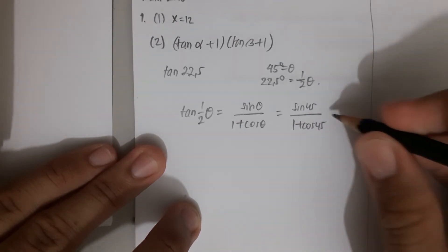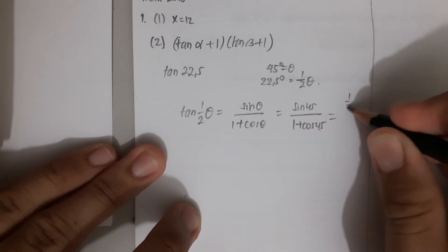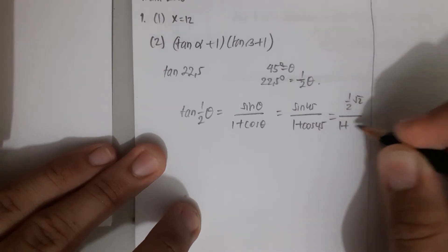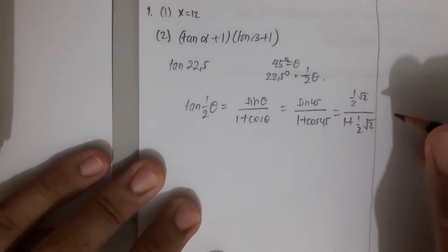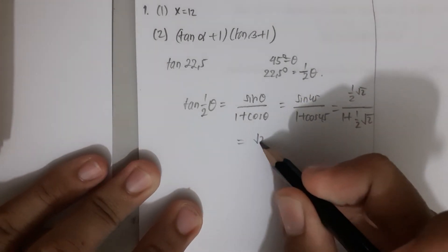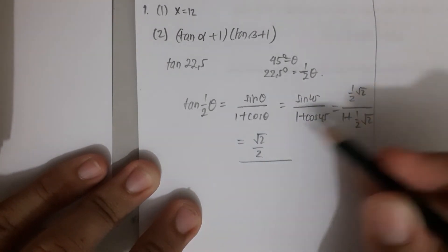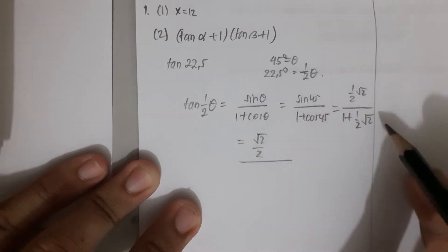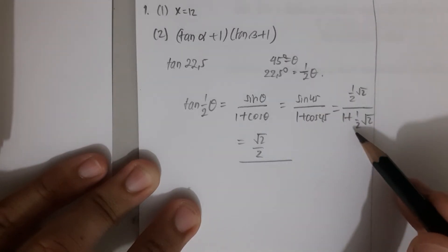We know that this equals (√2/2) and cos 45° also equals √2/2. We can calculate this, so it becomes √2/2 divided by (1 + √2/2).